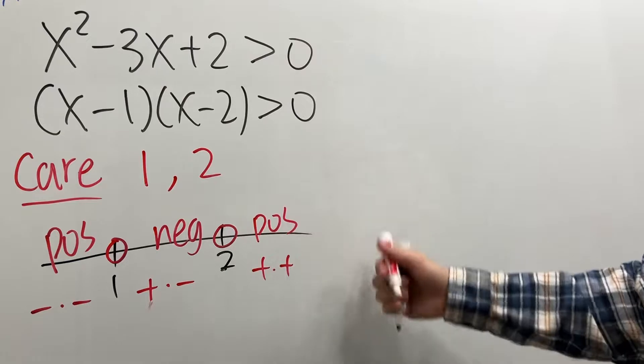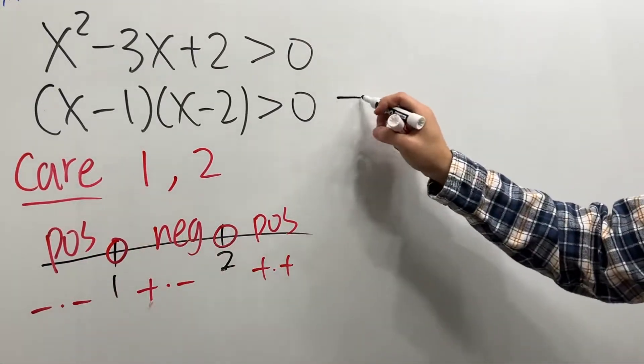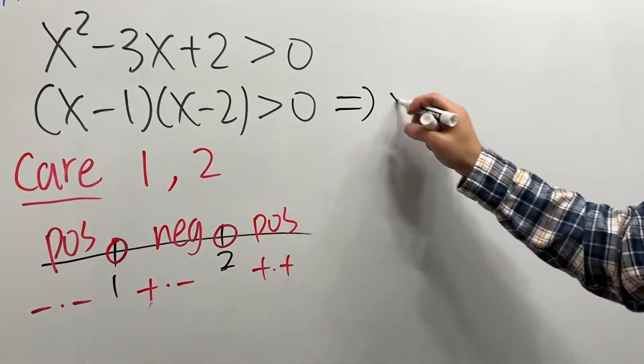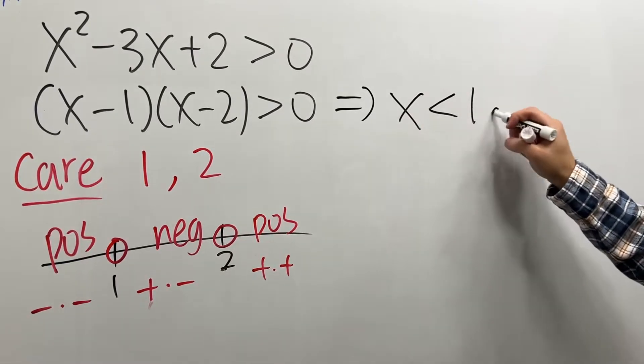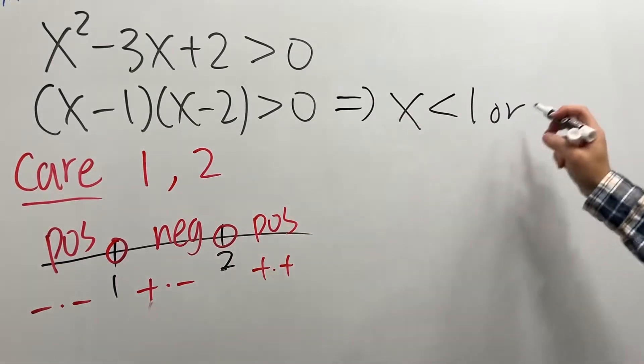So, this means we want this region and that region, which implies that x has to be less than 1, or x has to be greater than 2.